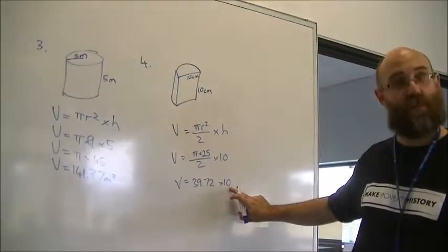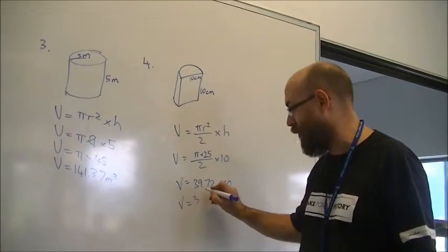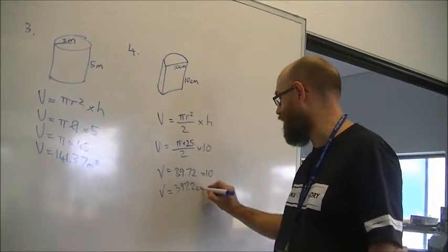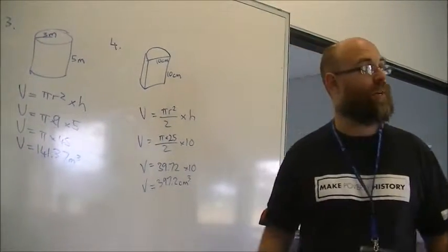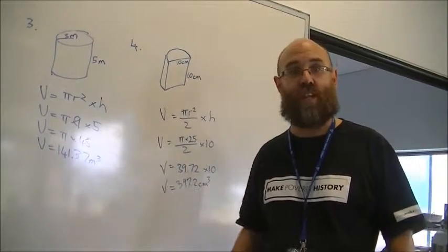And because it's times by 10, I know that I can just move my decimal place. So, it's 397.2 centimetres cubed. Jazz, am I correct? Okay, there you go. There are your answers. Watch this slowly if you need it.